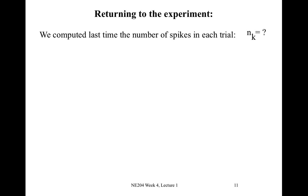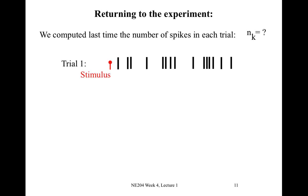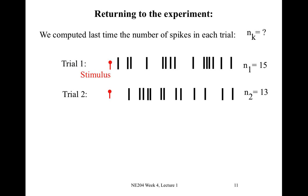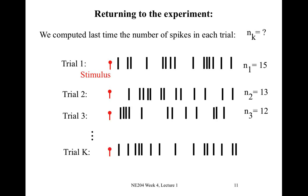We computed last week the number of spikes in each trial, giving it the symbol n sub k — n for the number of spikes and k for the trial. For example, in trial one we deliver a stimulus, observe the spiking activity, and count up the number of spikes: n sub one equals 15. For trial two, n sub two equals 13, and so on up to trial K. We now have a long list of numbers — a vector — of spike counts n sub 1 through n sub K.